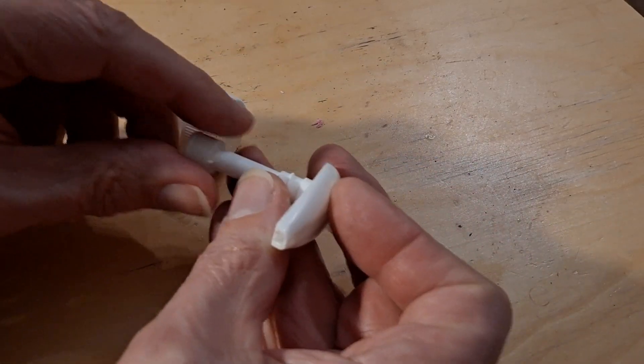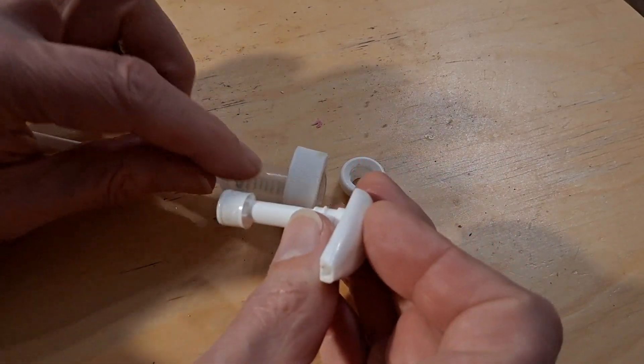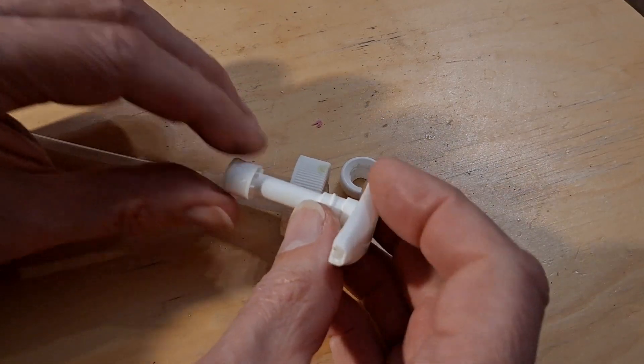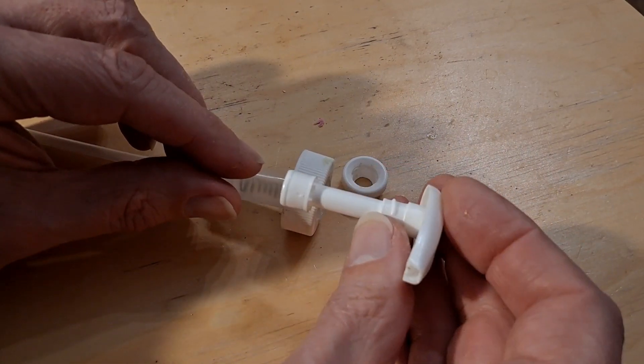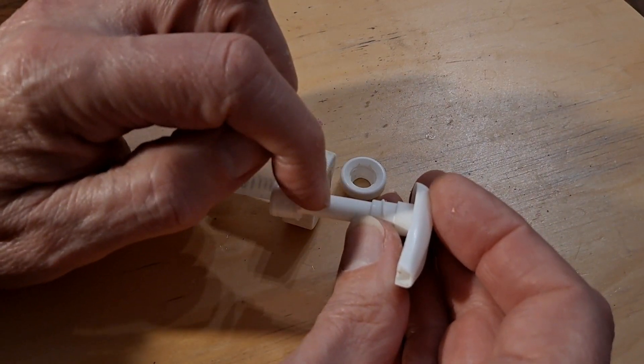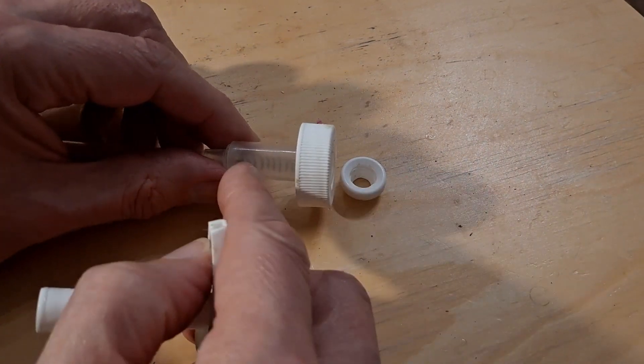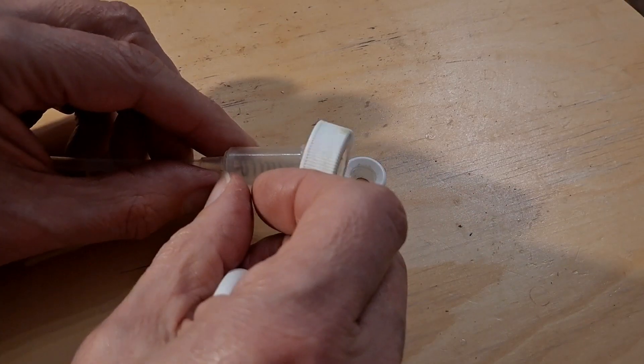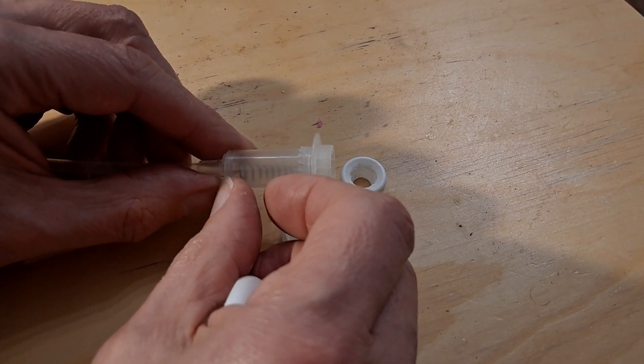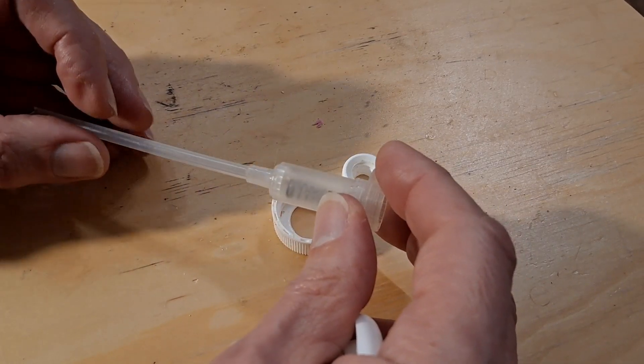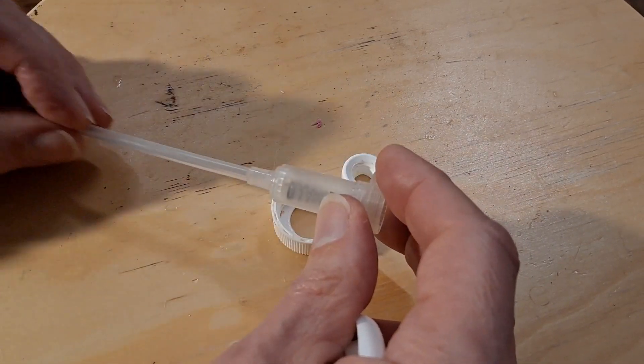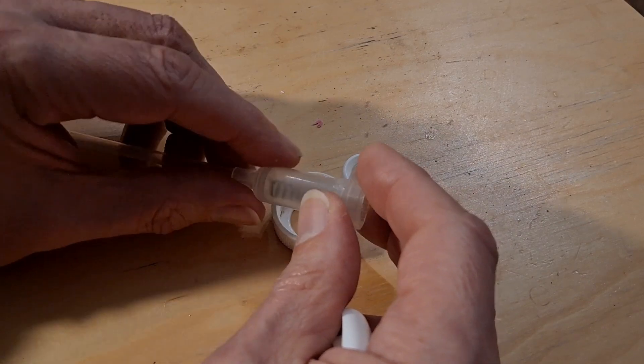As that pushes down into the cylinder there, the air is escaping up through there. When you pull it up, the valve seals it. So by pulling it up, you've increased the area there, created a partial vacuum. And the air pressure at this end pushes the liquid up into the chamber.